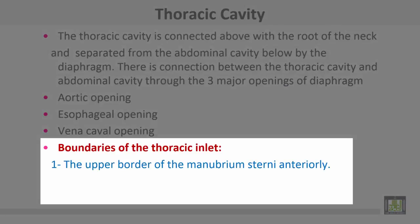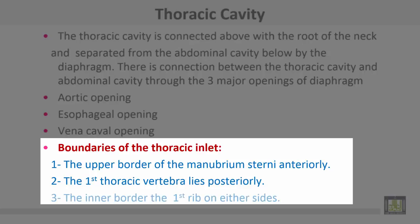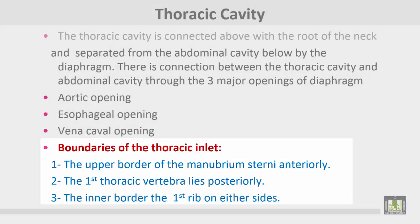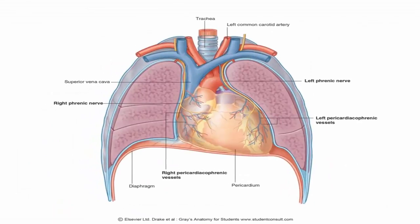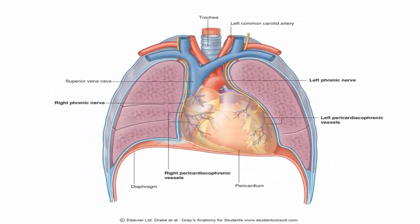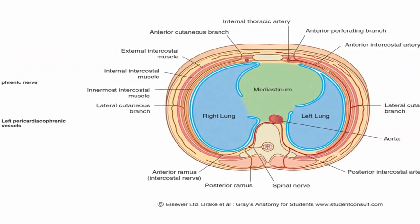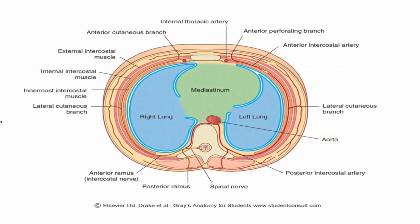The boundaries of the thoracic inlet are: the upper border of the manubrium sternum anteriorly, the upper border of the first thoracic vertebra posteriorly, and the inner borders of the first rib on either side. The mediastinum lies in the middle of the thoracic cavity, with two spaces on either side for both lungs and pleura. In transverse section, the mediastinum occupies the middle position.